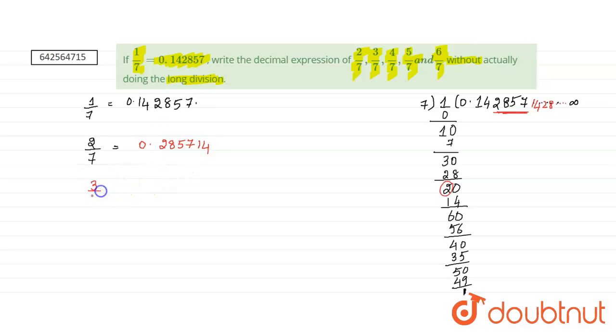Then if we take 3 by 7, 3 by 7 means this point, from here onwards everything is repeating. So, we will get 0 point, 3 is from here, from this point on 3 is repeating. So, we will get 0 point, 1, not 1, 0 point.